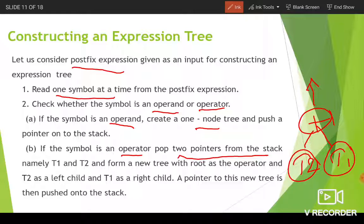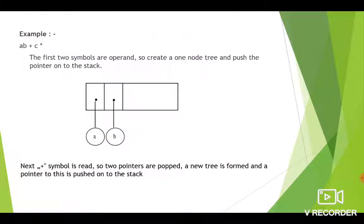To summarize: read one symbol at a time; if operand, create a one-node tree and push its pointer onto the stack; if operator, pop two pointers t1 and t2, create a new tree with the operator as root, t2 as left child, t1 as right child, and push the new tree's pointer onto the stack. We will now work through an example. The given postfix expression is: a b + c *. The first symbol is 'a'.